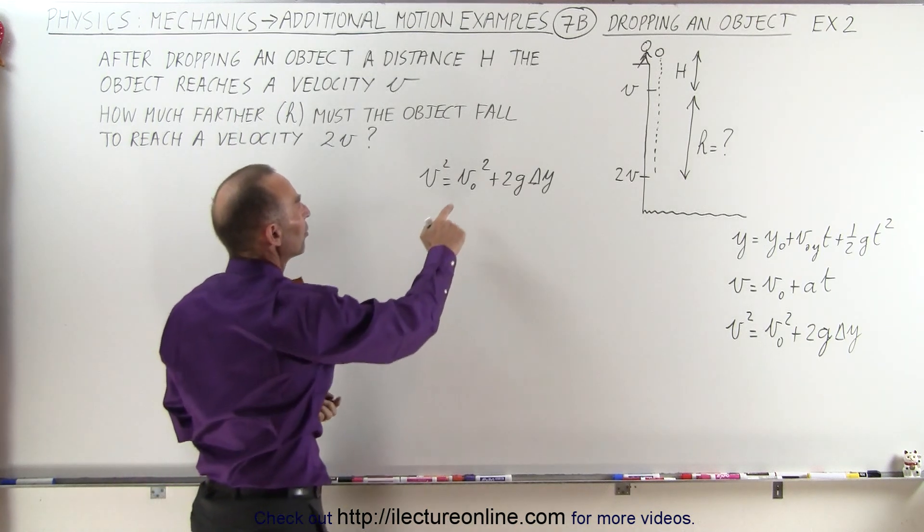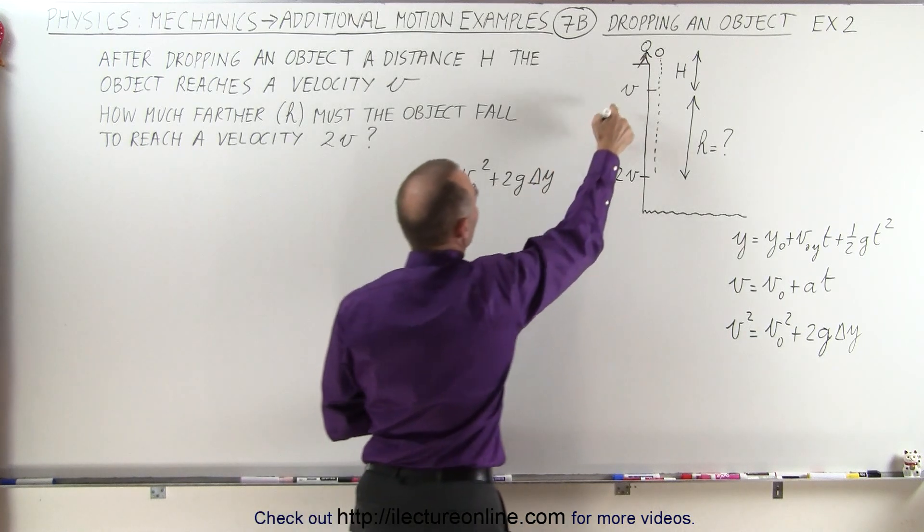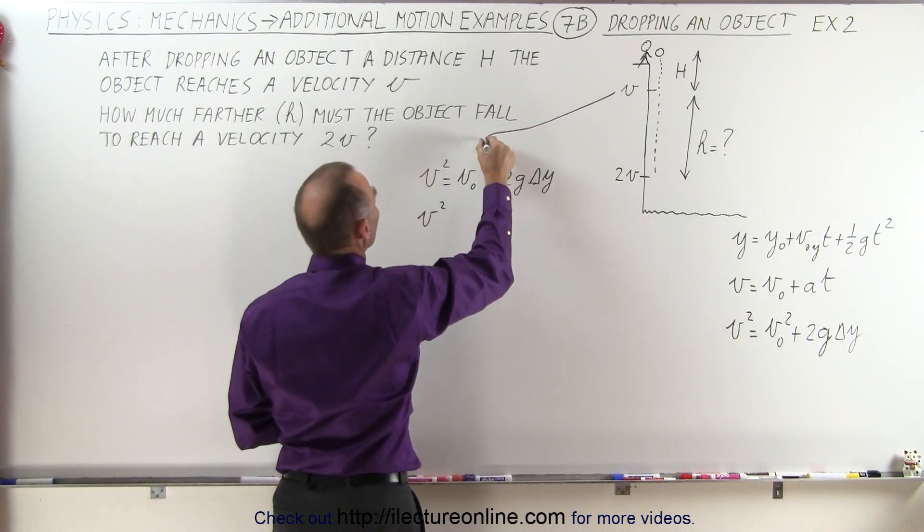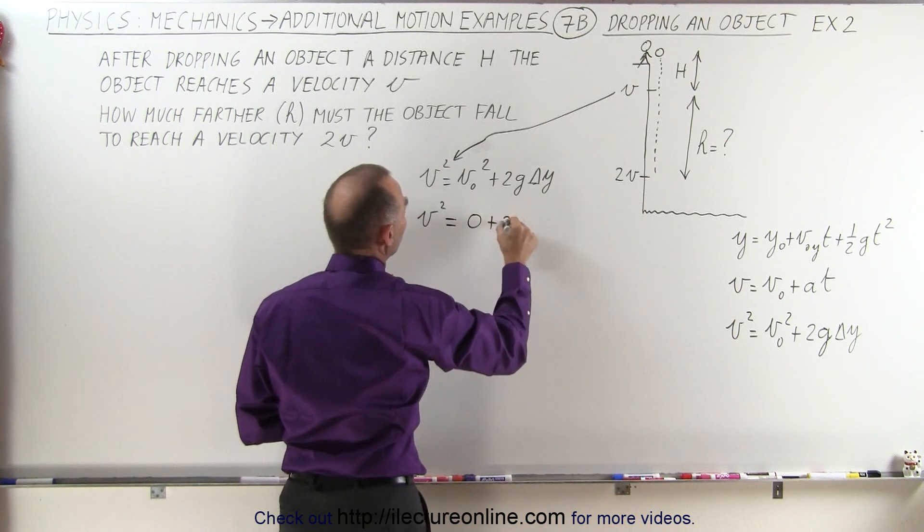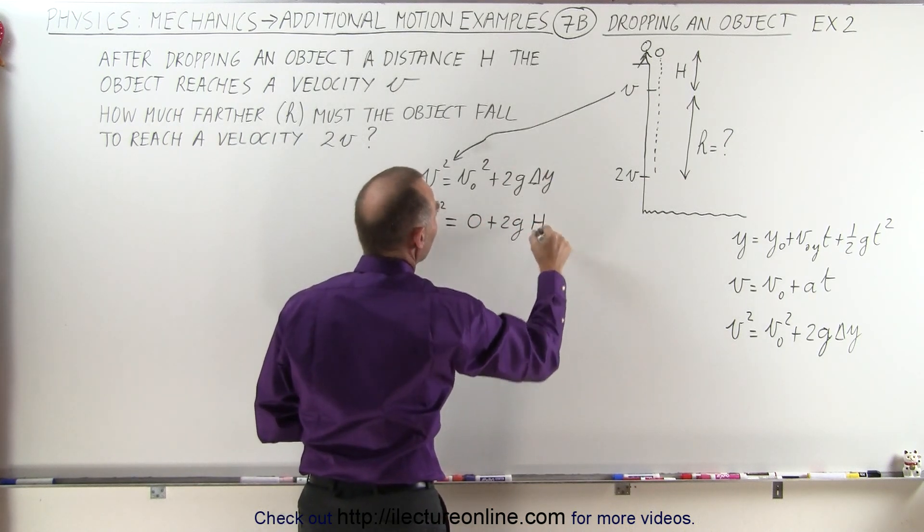So let's assume that the initial velocity is zero, so we can write that v squared, and of course we're talking about this v right here. Let's go ahead and say that's this v right there, is equal to zero plus 2g times delta y, and the delta y in this case will be capital H.